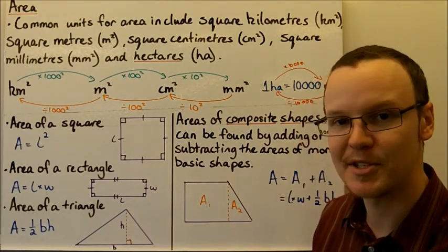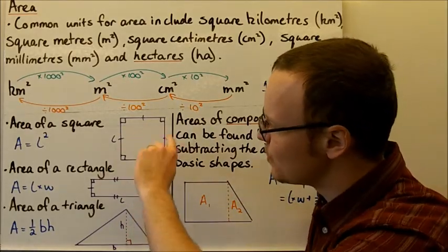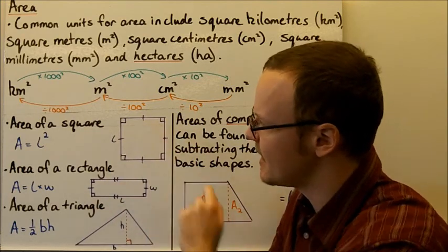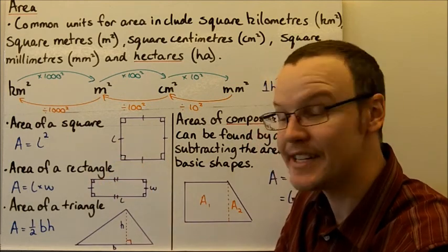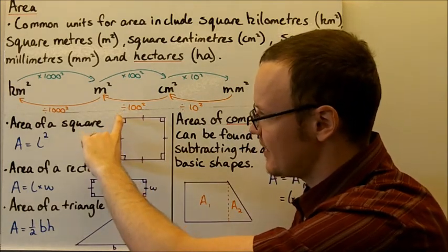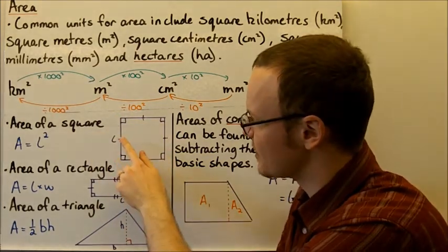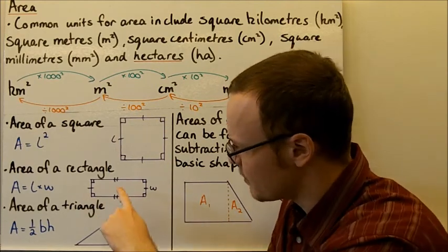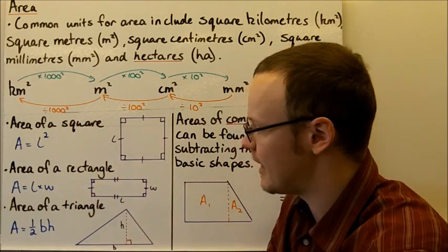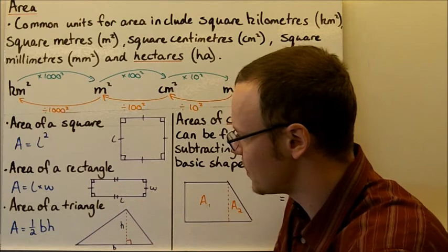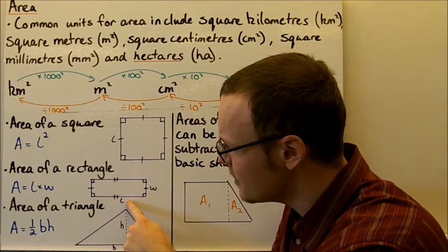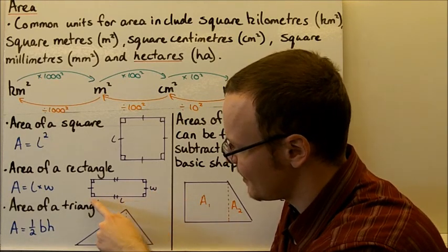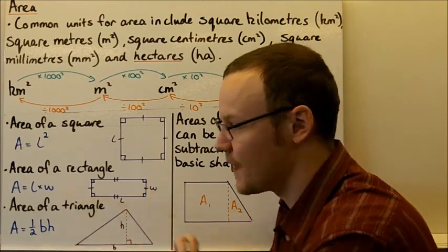Looking at three common shapes: first, a square. Squares have all the same side lengths and all interior angles are 90 degrees. The area of a square is the length of one side squared — that side length times itself. A rectangle has two different side lengths but still 90-degree interior angles. To find the area of a rectangle, multiply the length times the width.